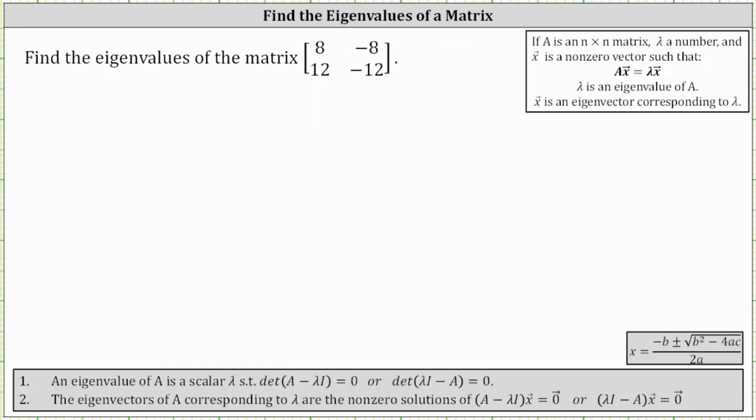We're asked to find the eigenvalues of the given two by two matrix. An eigenvalue of matrix A is a scalar λ such that the determinant of the difference of matrix A, the given matrix, and λ times the identity matrix equals zero. We can also use the alternative form of the determinant shown on the right. We'll use this first form.